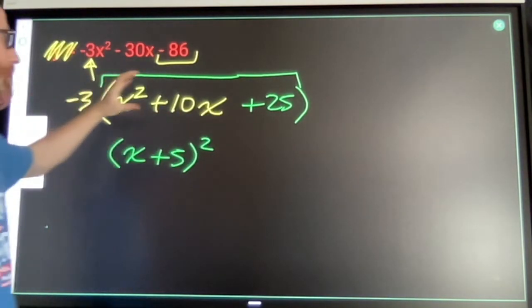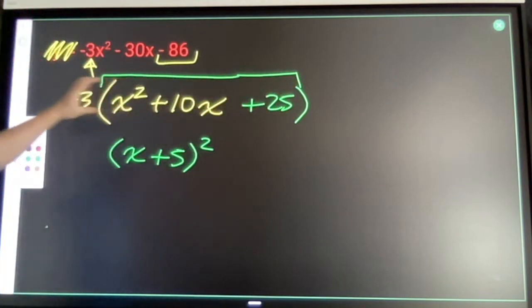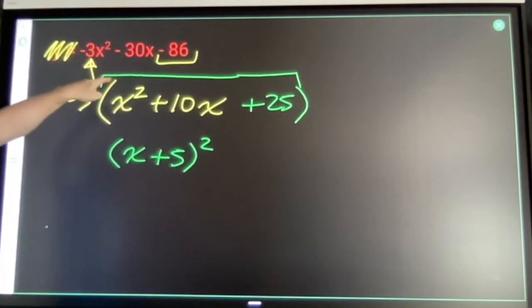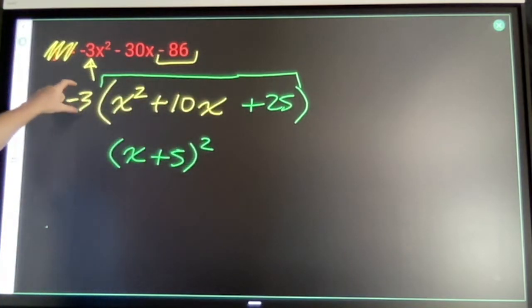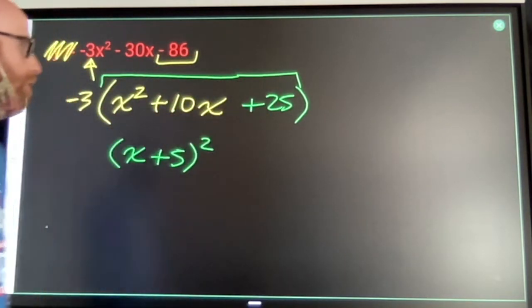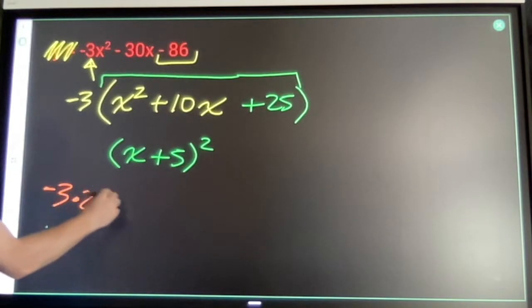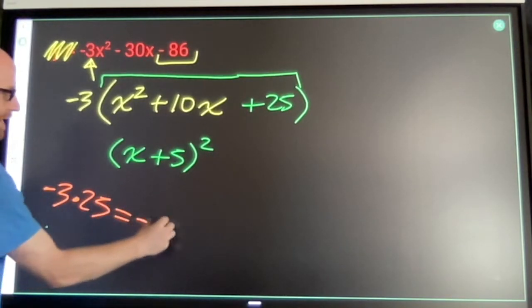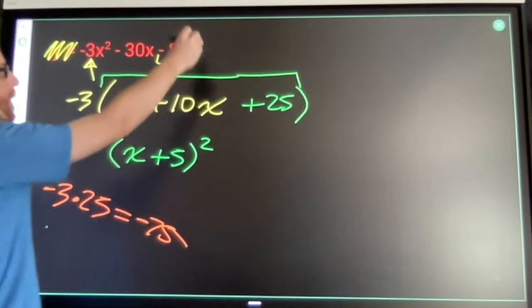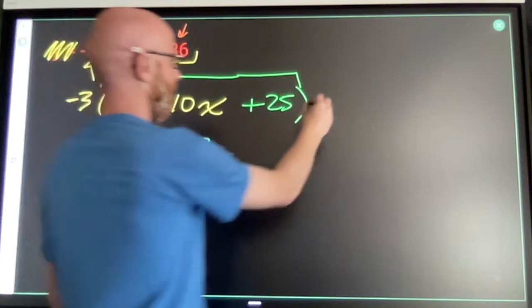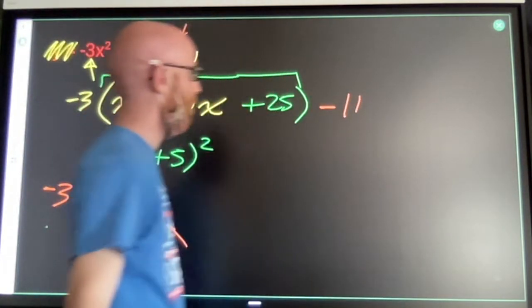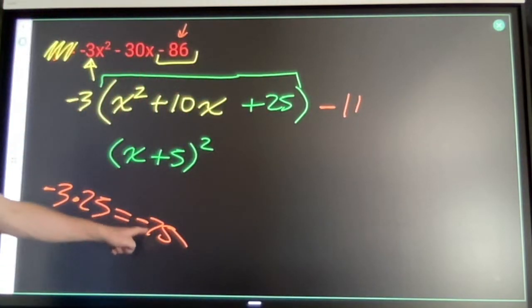Now, what I have right here, this term matches, this term matches. This one does not. I've got negative 3 times 25, which is negative 75. I'm supposed to have negative 86, so I need to subtract 11 more to make that true. Negative 75 minus 11 is negative 86.